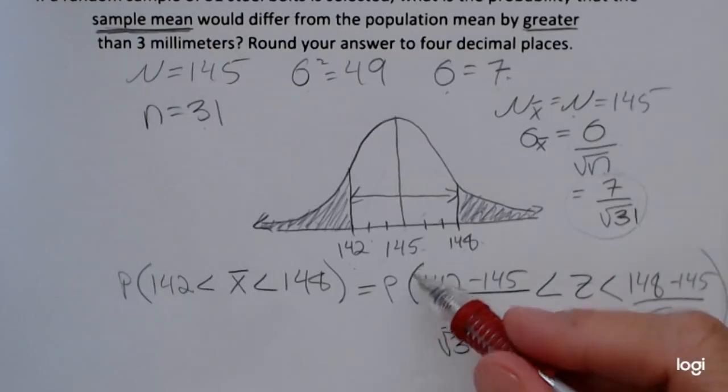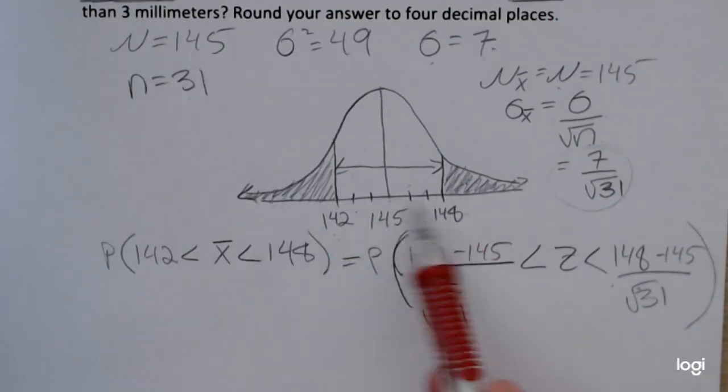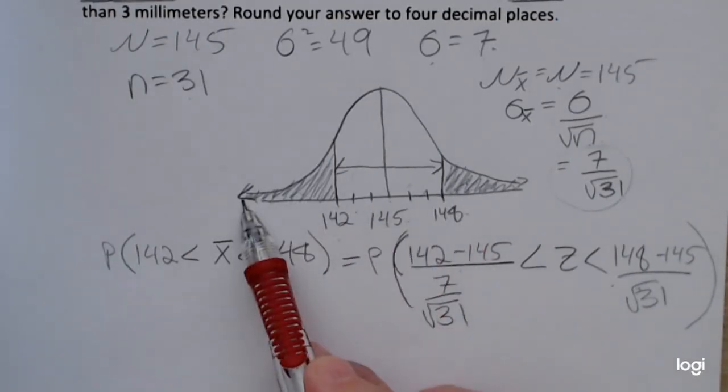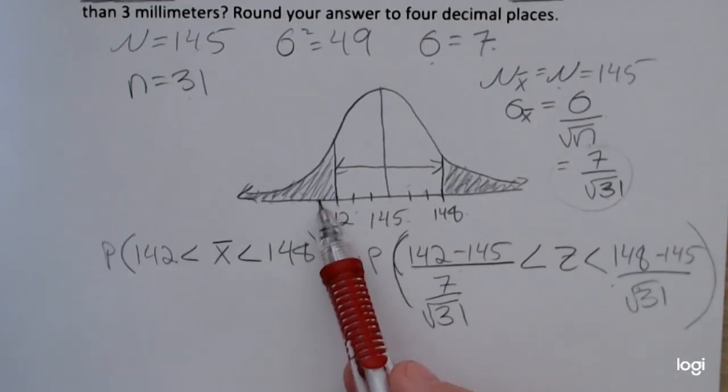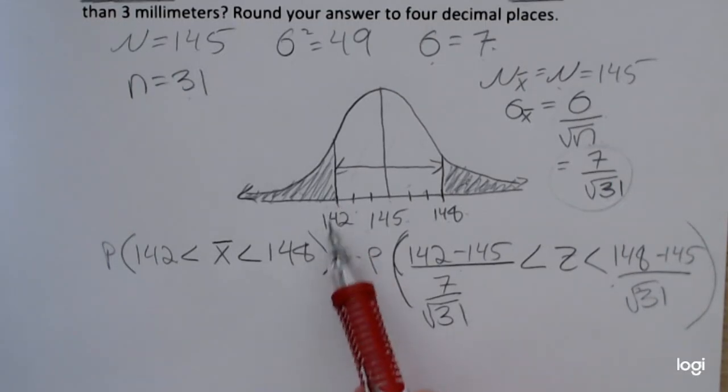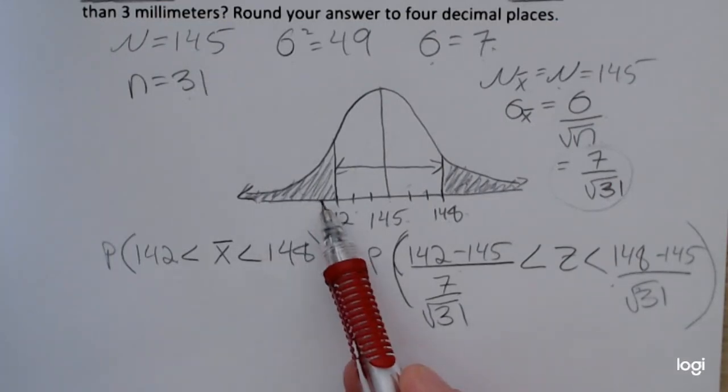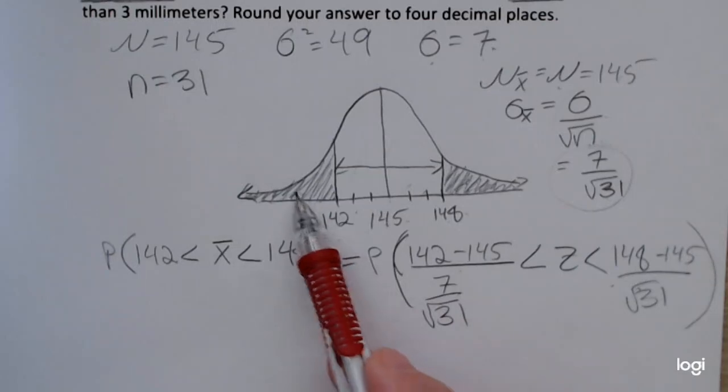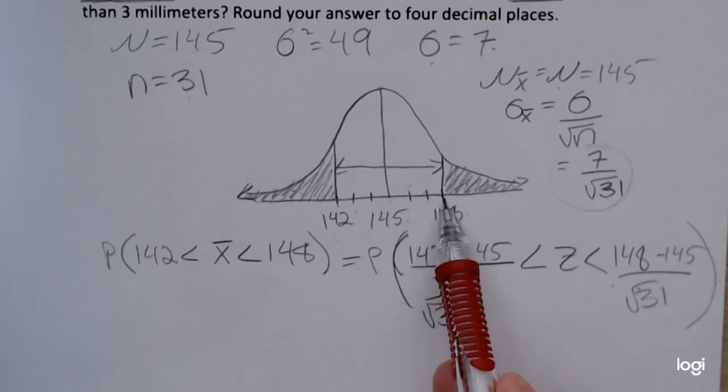After you do those two calculations, then you'd have to find this larger area from this first z-score to negative infinity using the z-table, since it reads cumulatively, and then double it, because these two areas are going to be symmetric, because we're looking at the same distance from the mean in either direction.